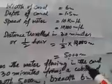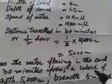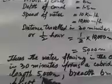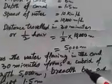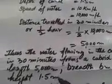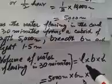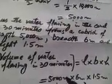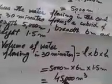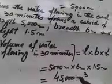The water flowing in the canal in 30 minutes forms a cuboid of length 5,000 meters, breadth 6 meters, and height 1.5 meters. The volume of water flowing in 30 minutes is 5,000 multiplied by 6 multiplied by 1.5, which equals 45,000 cubic meters.